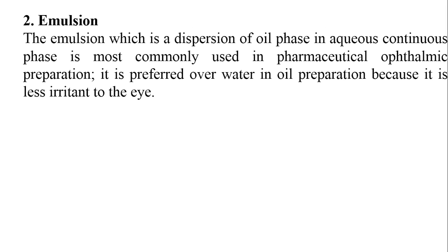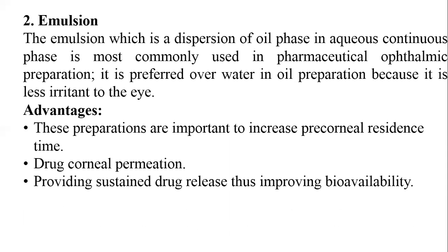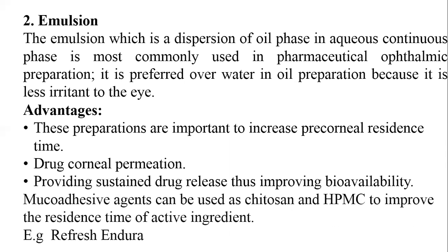The second conventional system is the emulsion. An emulsion is a dispersion of an oil phase in an aqueous continuous phase and is most commonly used in pharmaceutical ophthalmic preparations. Oil-in-water is preferred over water-in-oil because it is less irritant to the eye. These preparations increase precorneal residence time, corneal drug permeation, and provide sustained drug release, improving bioavailability. Mucoadhesive agents such as chitosan and HPMC can improve residence time. An example is Refresh Endura.